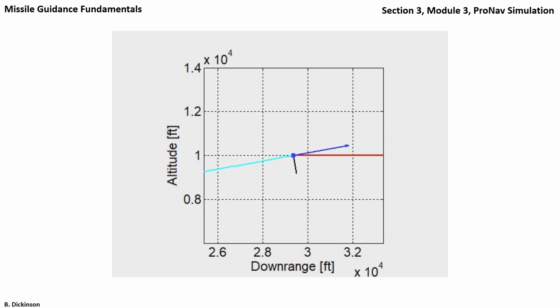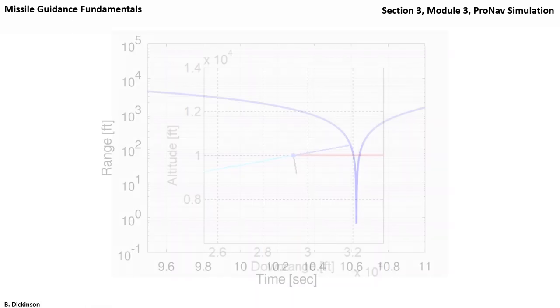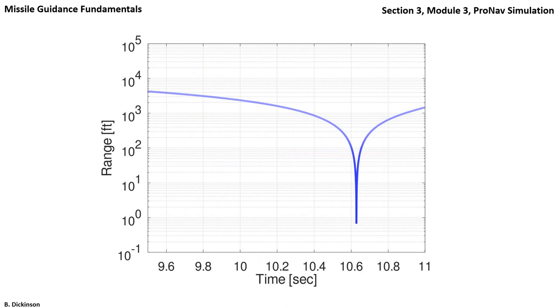As the pursuer passes, line of sight rate becomes non-zero again so that a finite acceleration command is made. How close do we get to the target? This is a plot of range versus time where range is on a log scale. Note that range is monotonically decreasing to a minimum value.